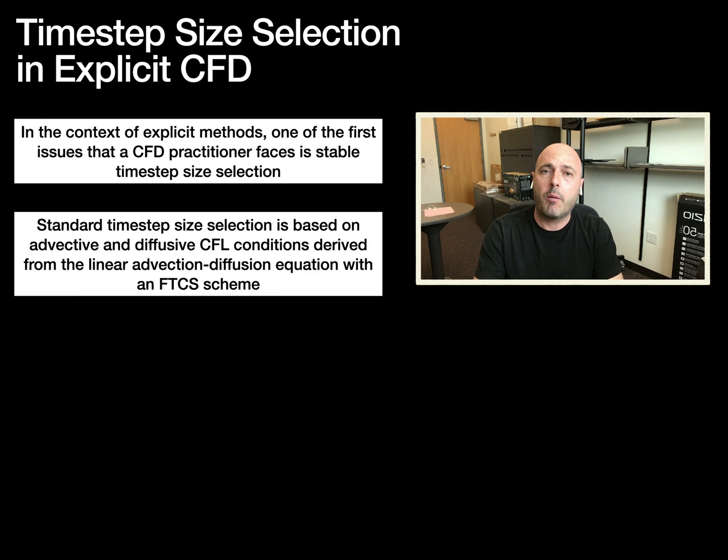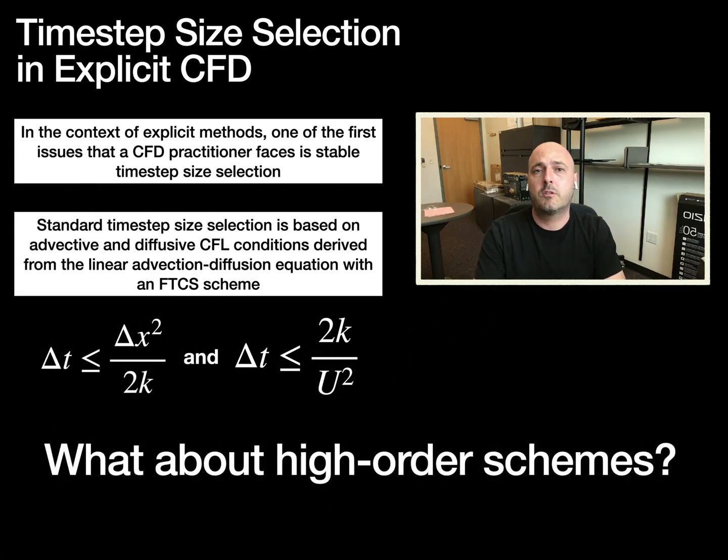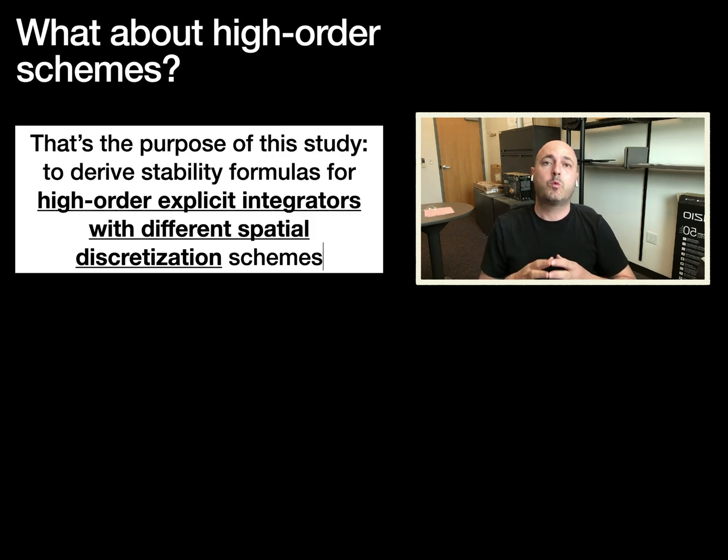The formulas that we commonly use are based on advective and diffusive CFL conditions derived from a forward-in-time, central-in-space discretization scheme on the advection-diffusion equation. However, in practice, many codes use high-order integration in time and different discretization schemes on advection. Despite this fact, many codes still use these first-order CFL conditions. The purpose of this paper is to find out what these formulas become in the case of 2nd, 3rd-order, 4th-order Runge-Kutta, or other discretization schemes on advection and diffusion.